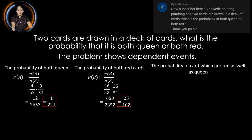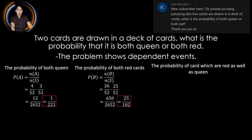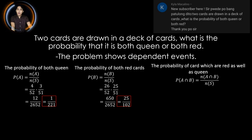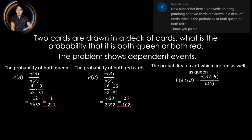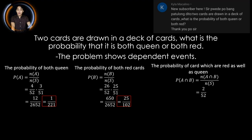For the third situation, we need to find the probability that the two cards are both red as well as queens. This implies the intersection of the first and second situations — the probability of A intersection B, equal to n(A∩B) over n(S). There are only two cards that are both red and queen: the queen of hearts and the queen of diamonds. So the probability is 2 over 52 for the first draw.